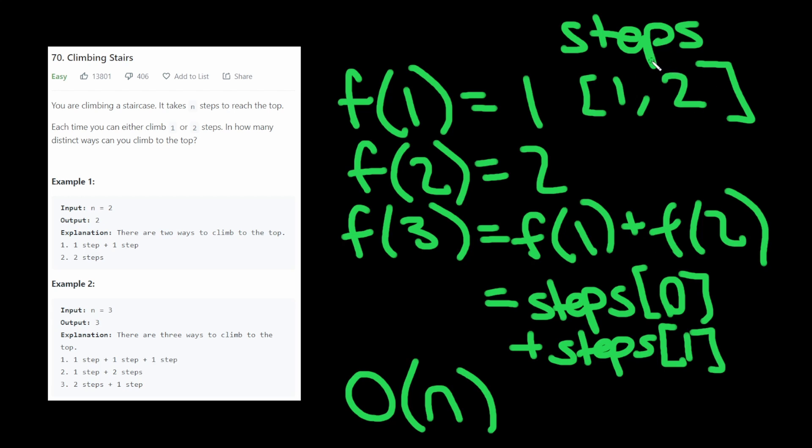In this case, we can actually get clever and just have two variables, one for the previous step, one for two previous steps. And that way, we get to O of one. I think it's easier to read if we just use an array for the space, however. So I'm just going to keep it at O of n.